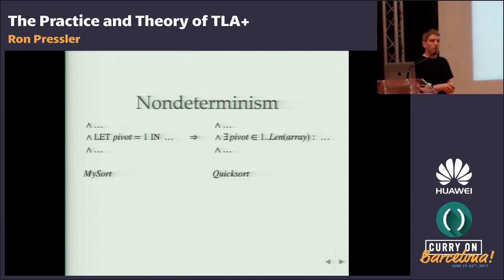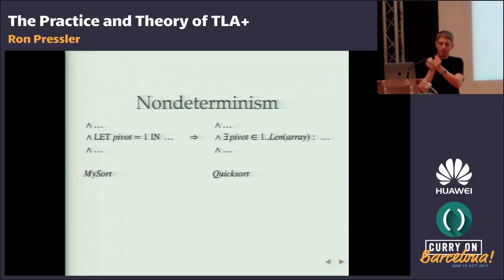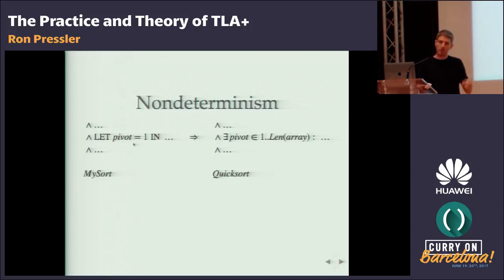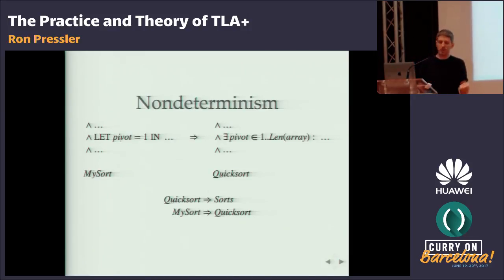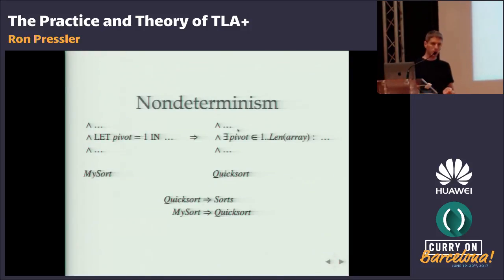Going back to Quicksort: we can define Quicksort precisely and mathematically, expressing the non-determinism inherent in saying we can pick any pivot. Then we specify a more detailed implementation where we pick the pivot to be the first element, and show that this formula is a refinement of the abstract one. What we get is that if we prove that Quicksort sorts no matter how you choose the pivot, and we show that our specific program is a refinement of Quicksort, by the transitivity of implication we automatically get that our program sorts.